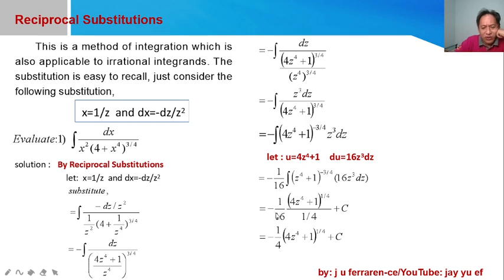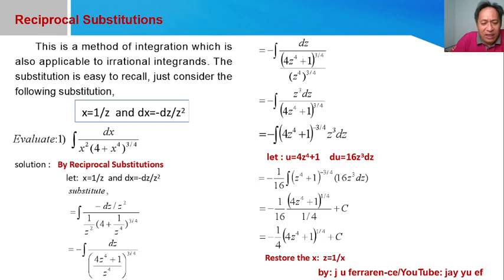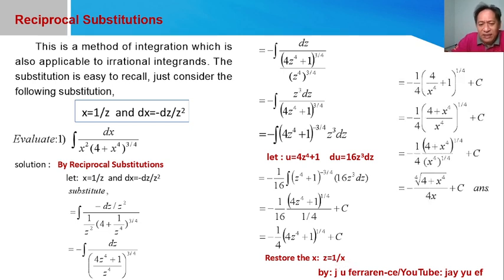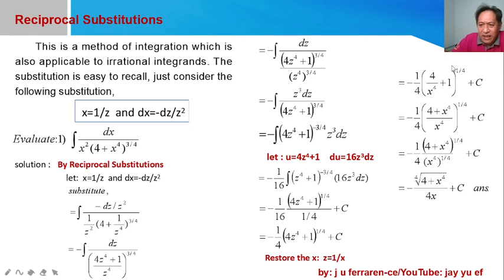Simplifying, 1/16 divided by 1/4 gives 1/4, so the result is negative one-fourth times (4z⁴ + 1)^(1/4). Our answer must be expressed in terms of the original variable x, so we restore z by replacing it with the reciprocal of x — that is, z = 1/x. Substituting back, z⁴ becomes (1/x)⁴ = 1/x⁴, so we have (4/x⁴ + 1) raised to the one-fourth power.